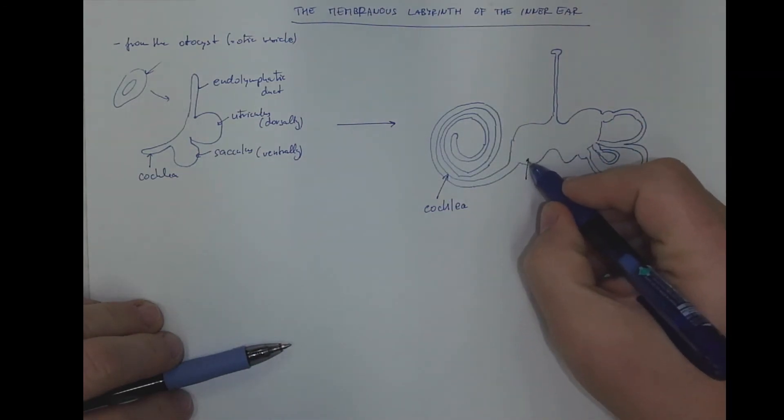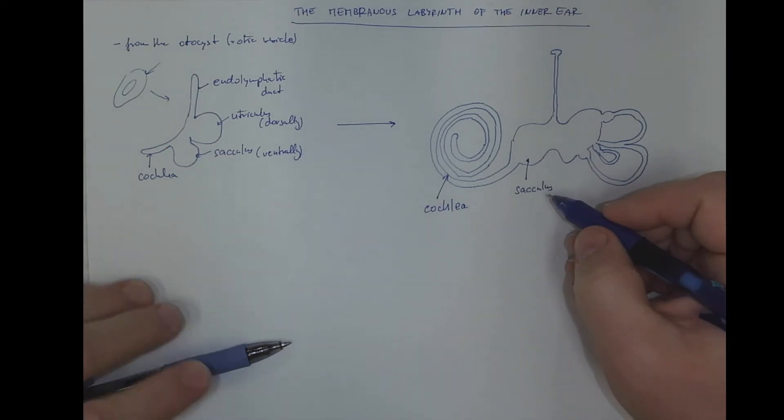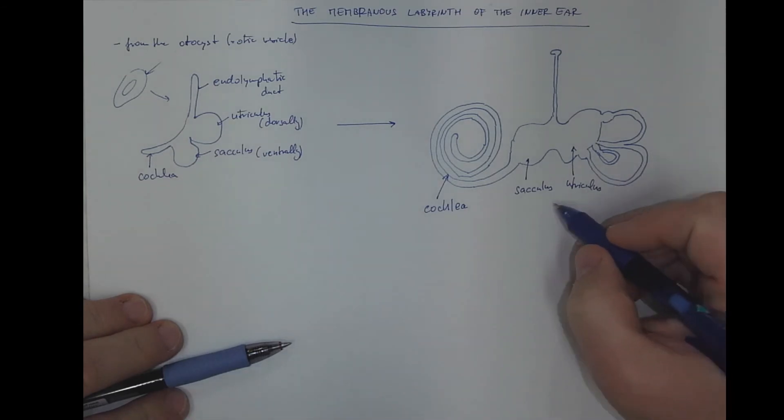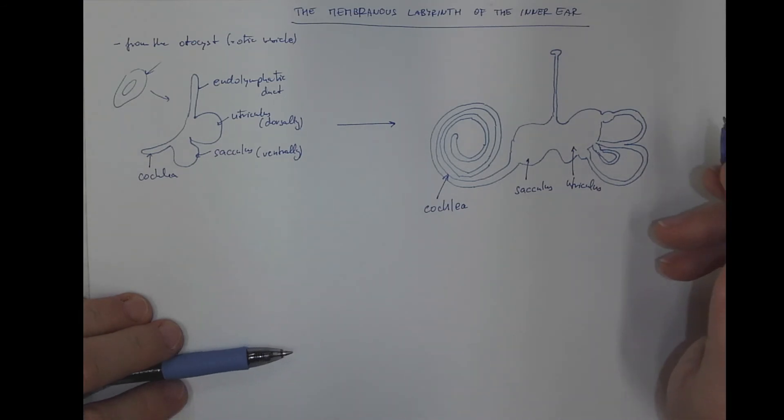This would be the sacculus. This would be the utriculus. Together, they are perceiving horizontal and vertical movements of the head, with the otoliths that are triggering nerve impulses of the sensory cells.